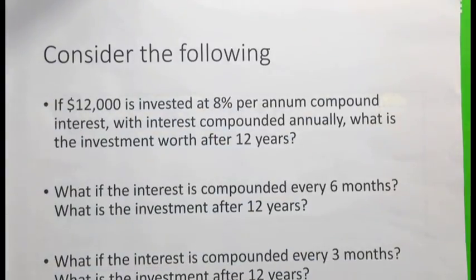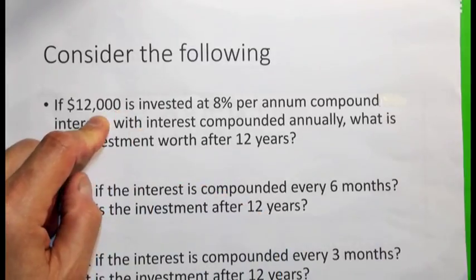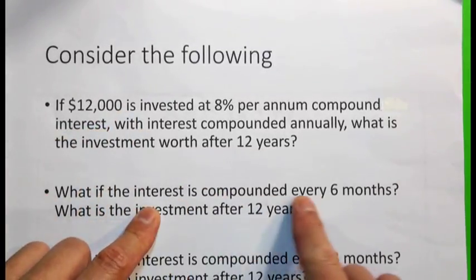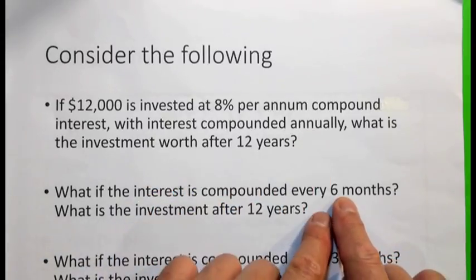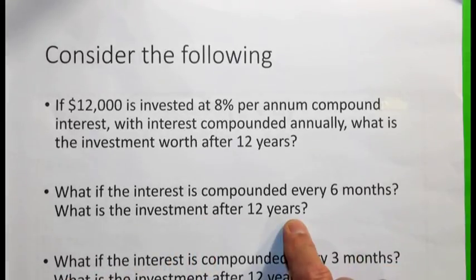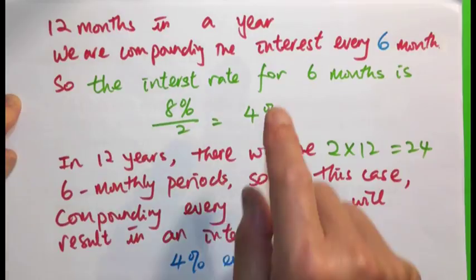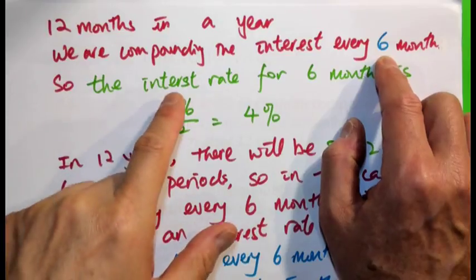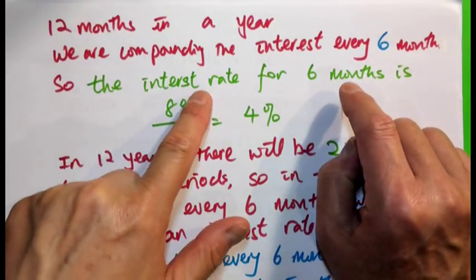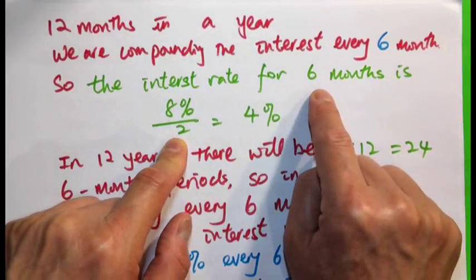Scenario 2: We are still investing $12,000, but this time we are looking at the interest compounded every 6 months — not annually, but 6-monthly. What is the investment worth after 12 years? There are 12 months in a year, so compounding interest every 6 months means we need to divide the interest rate per annum by 2, because in one year there are 2 six-monthly periods.